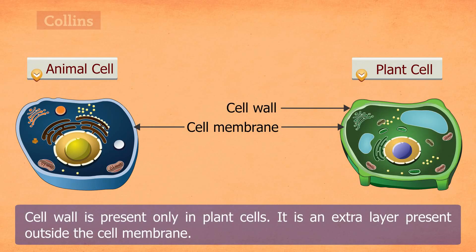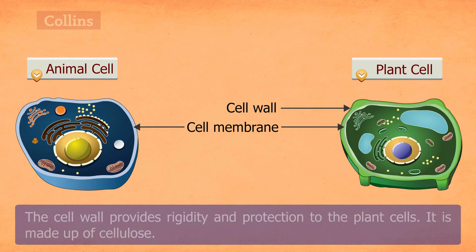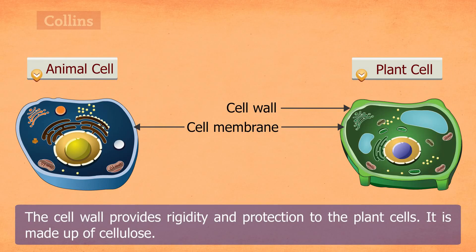Cell wall is present only in plant cells. It is an extra layer present outside the cell membrane. The cell wall provides rigidity and protection to the plant cells and is made up of cellulose.